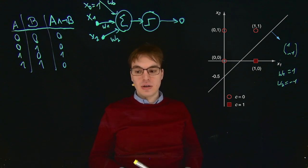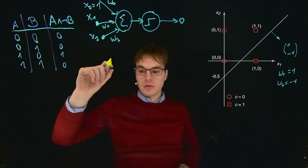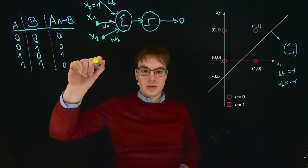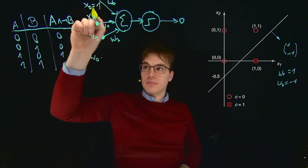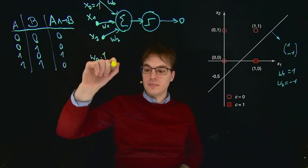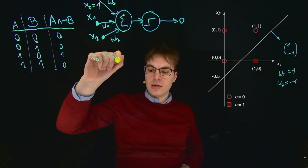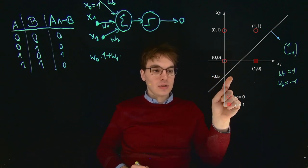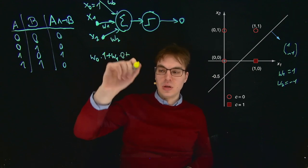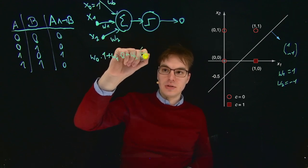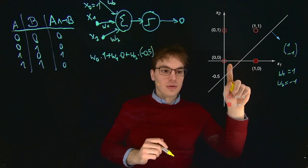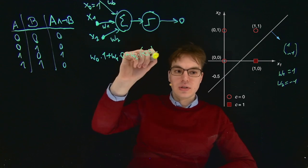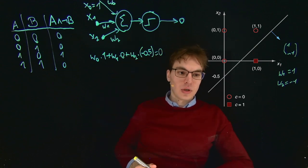We just fill this in into our equation. So the equation that we have here is W0 times 1, because this is our X0, plus W1 times 0, because X1 is 0 at this point, plus W2 times minus 0.5, this value for X2, equals 0, because we're considering the normal form of the equation for this line.